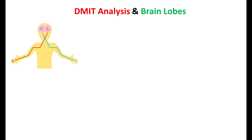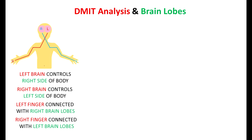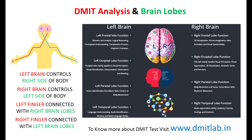Our right brain controls the left side of the body, and the left brain controls the right side of the body. Similarly, the left fingers are connected with the right brain lobes, and the right fingers are connected with the left brain lobes. During the DMIT test, we study the left and right brain lobes, and based on their functions and usages the DMIT report is generated. To know more about the DMIT test, please visit www.dmitlab.in.